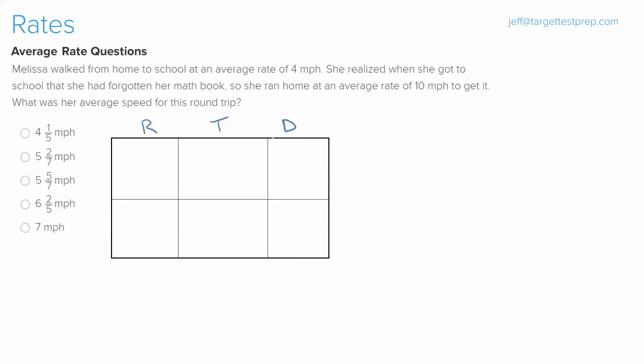Because we know this is an average rate question, we get to use a formula that is average rate, or we'll say average for short, is equal to total distance, or total D, divided by total time, or total T.